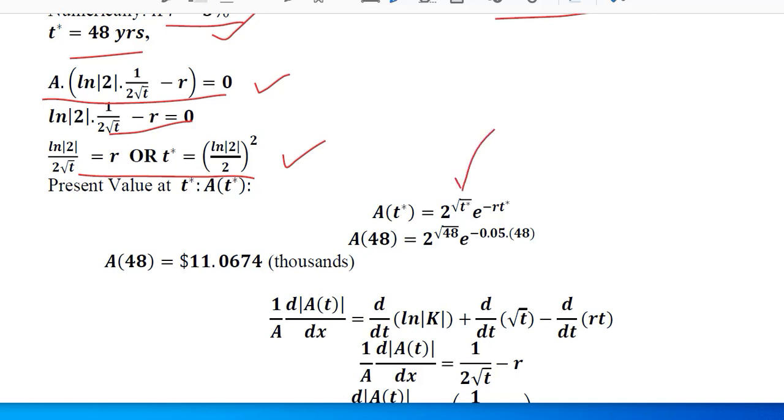So we are going to put the value of t and r here. So after substituting these values, we have the present value of the timber after 48 years.